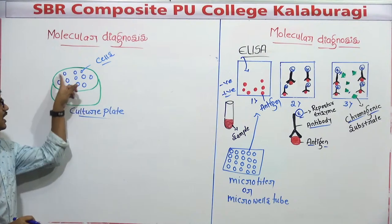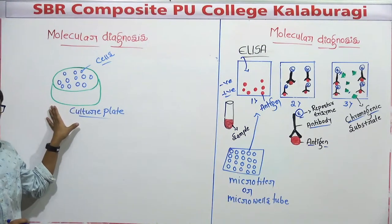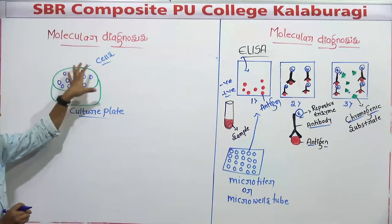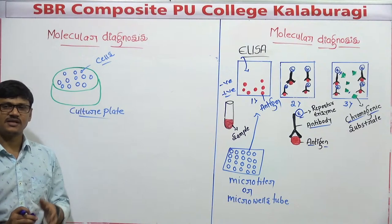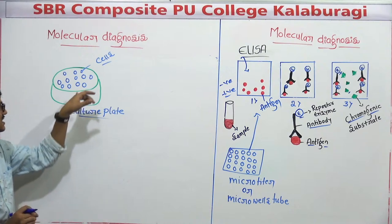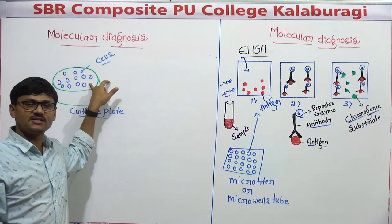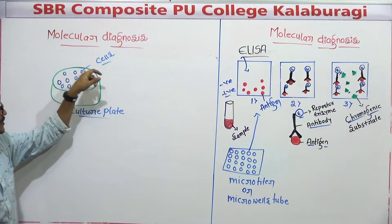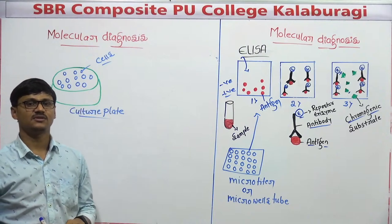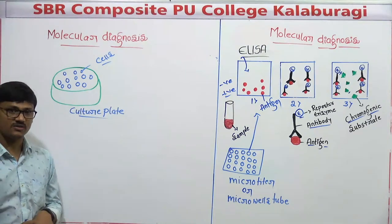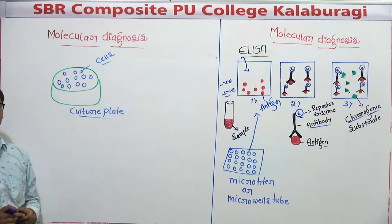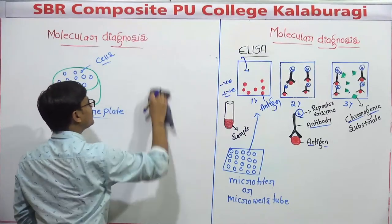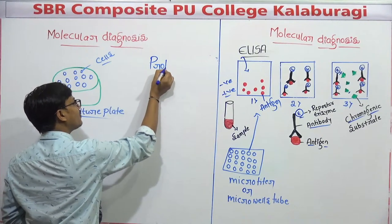Imagine we have a colony of cells — a group of cells in a culture plate. We are culturing the cells in a culture plate on a nutrient media. Out of all these cells, some cells have had their DNA mutated — mutation has occurred. By just looking at the cells, you cannot identify which cell has undergone mutation. To find out which cell has undergone mutation, we use a probe.